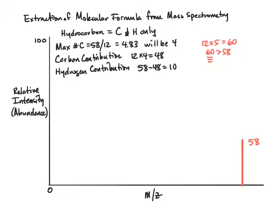We can see that using this logic, we have 4 carbons and we have 10 hydrogens. So therefore, our molecular formula is C4H10.